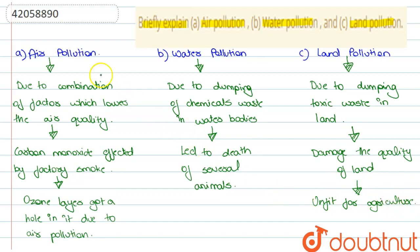So let us do a quick revision. Air pollution due to combination of factors which lower the air quality. Water pollution due to dumping of chemical waste in water bodies. Land pollution due to dumping toxic waste in land.